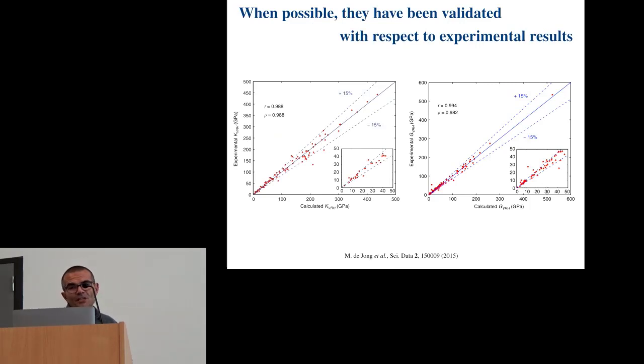In most of the cases, when it was possible, all those work included also a validation. So, meaning comparison with the available experimental data. In many cases, the amount of available experimental data is quite small, and so, often, it's a limited number of points, but still, the effort was made. So, this, in this case, it's the elastic constant. So, comparison of the shear modulus and the bulk moduli.